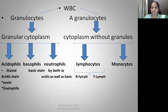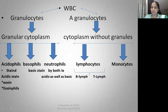In agranulocytes, we have lymphocytes and monocytes. There are two types of lymphocytes: B-lymphocytes, which are produced by the bone marrow, and T-lymphocytes, which are produced by the thymus. The other type of WBC is monocytes. This covers the granulocytes and agranulocytes of WBCs.